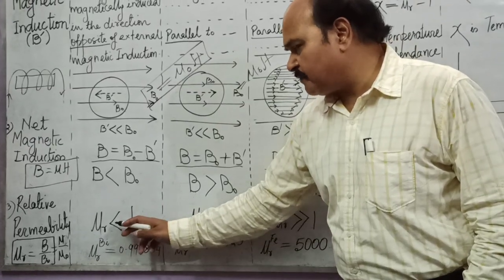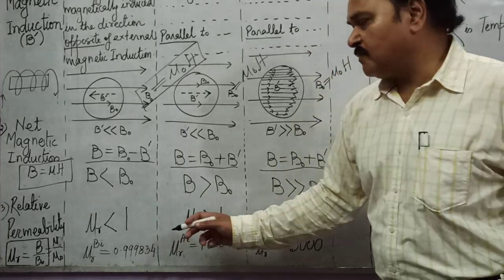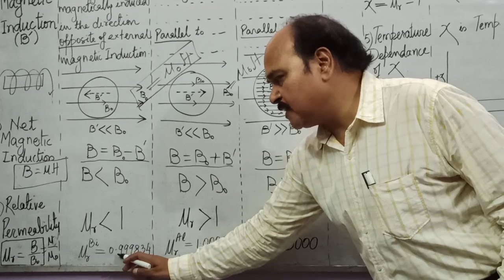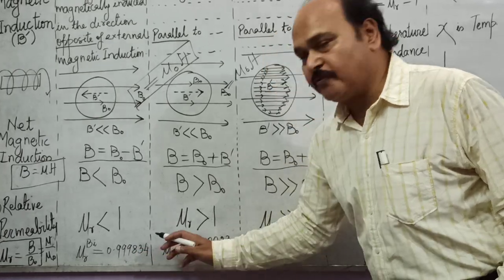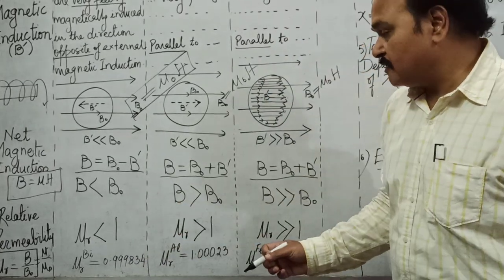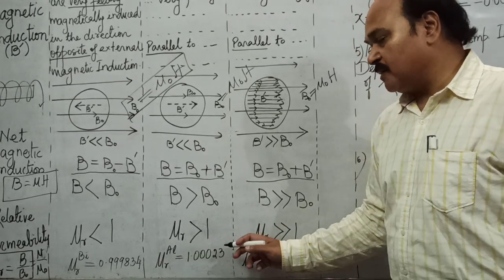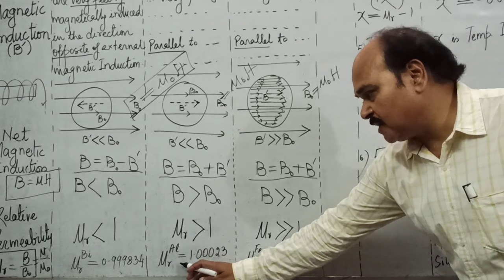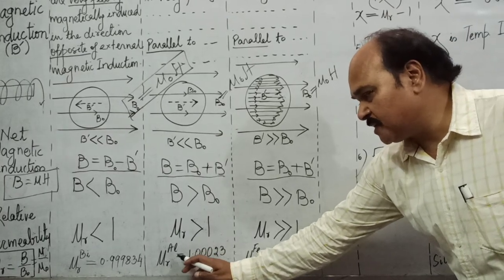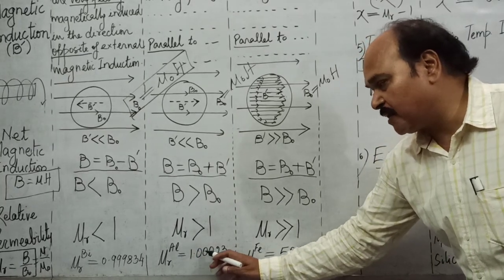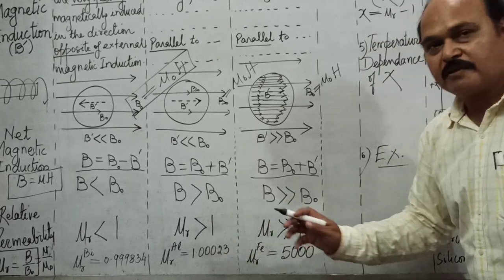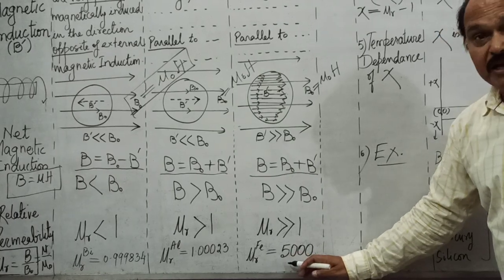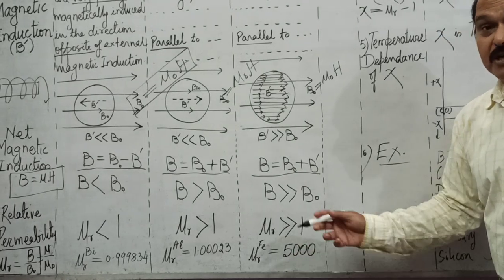For example, μr for Bismuth (a diamagnetic substance) is 0.999834 — very slightly less than one. For Aluminium (a paramagnetic substance) μr is 1.00023 — very slightly more than one. For Iron (a ferromagnetic substance) μr is 5000 — much greater than one.